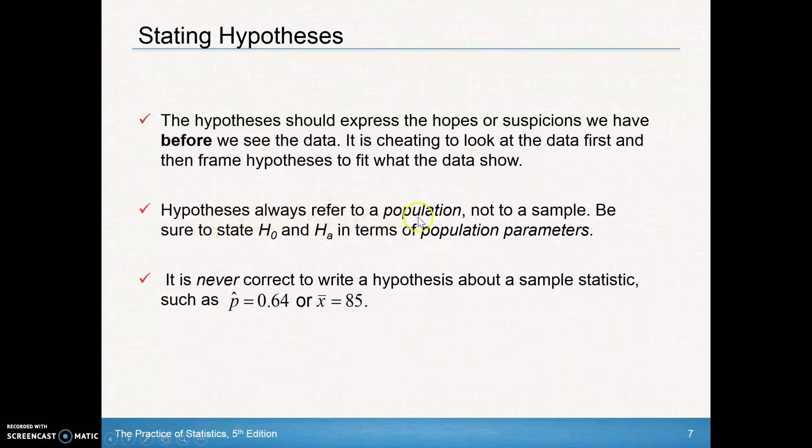Hypotheses always refer to a population - always to a population and to whatever that population parameter is, and the ones we know are p or mu. It does not refer to a sample. So be sure to state the null and alternative hypotheses with population parameters. As you can see below, it's never correct to write something like the null hypothesis is p hat equals 0.64. Never do that. That's a statistic. It should always be a parameter equaling whatever the value is. Never say x bar equals 85 because that's not a parameter. Mu is the parameter that we'd be trying to estimate.